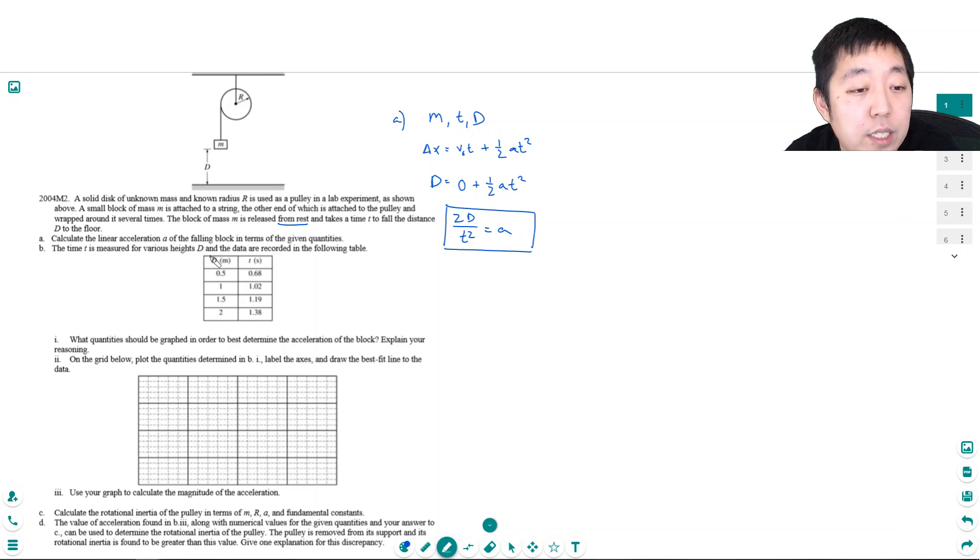The time t is measured for various heights d and the data are recorded in the following table. What quantity should be graphed in order to best determine the acceleration of the block? Explain your reasoning. Well, what I want to plot is I want the slope to be a. So I would plot the quantity, if I rearrange the equation, at squared. If I plot this as my y quantity and this as my x quantity. So I'm going to plot 2d versus t squared. This is what I want to plot. And the slope of this then would be a. So y equals mx. That's kind of what I'm trying to do. So 2d versus t squared.